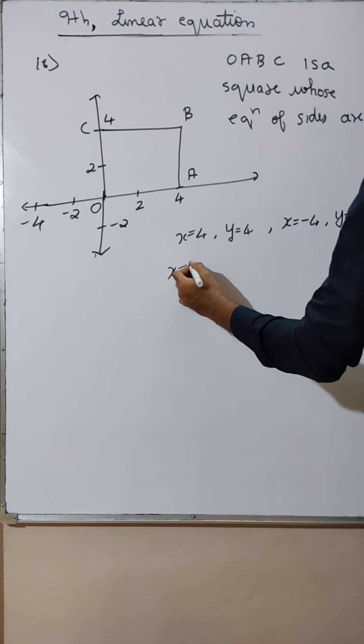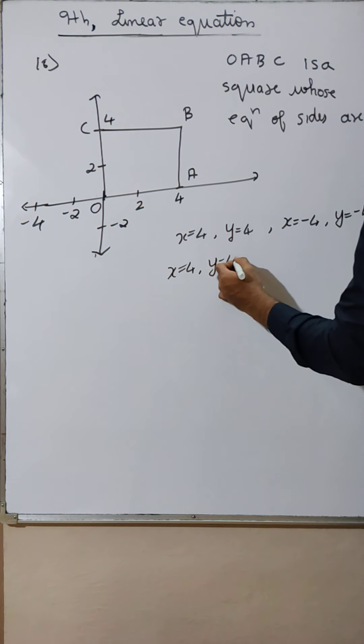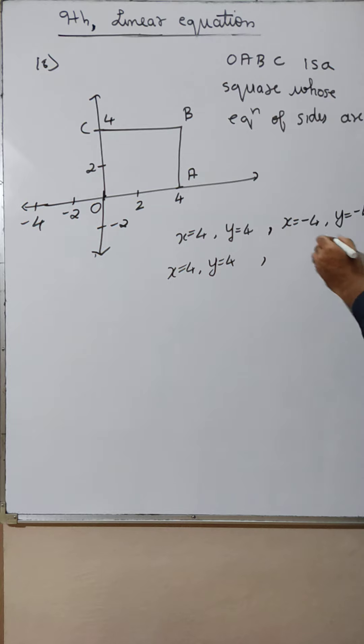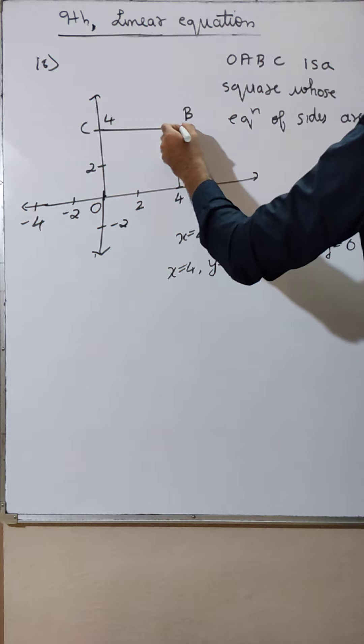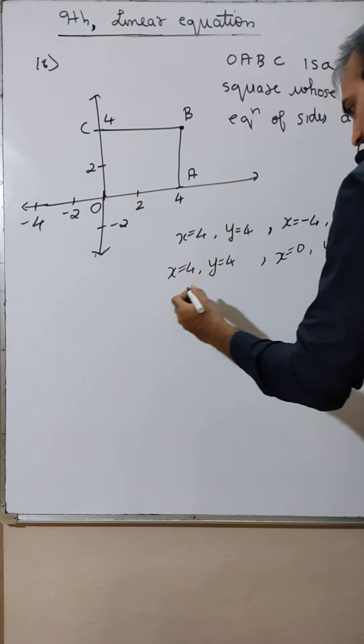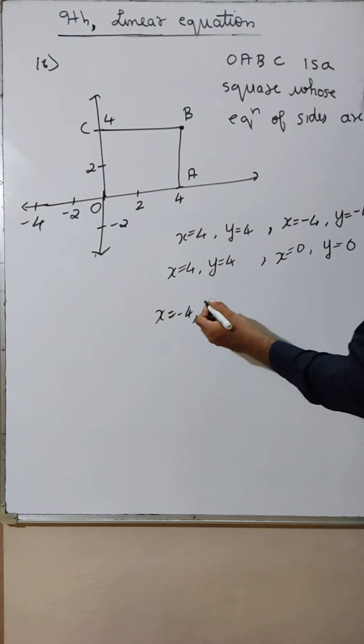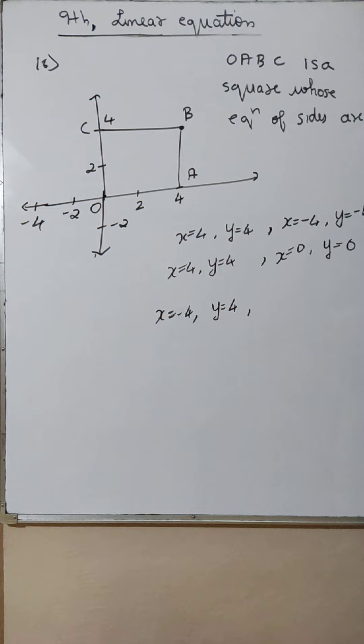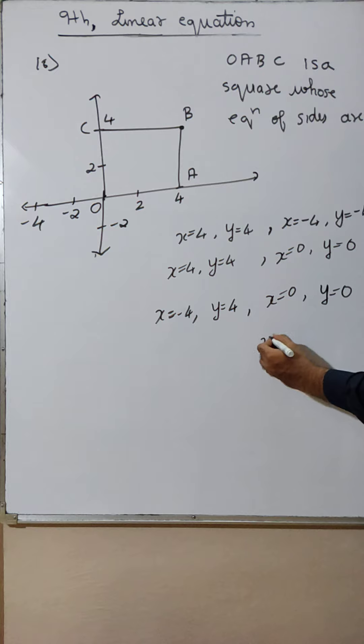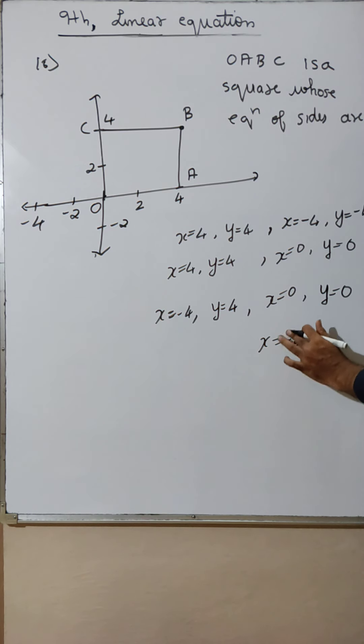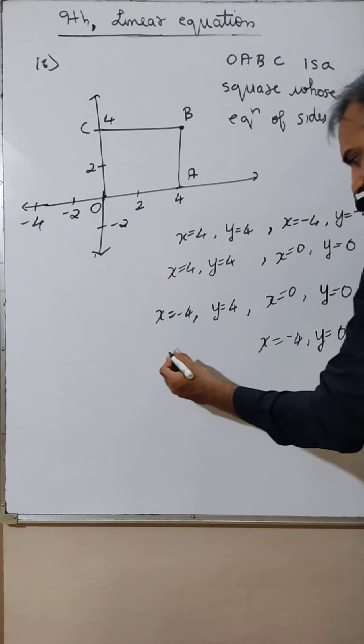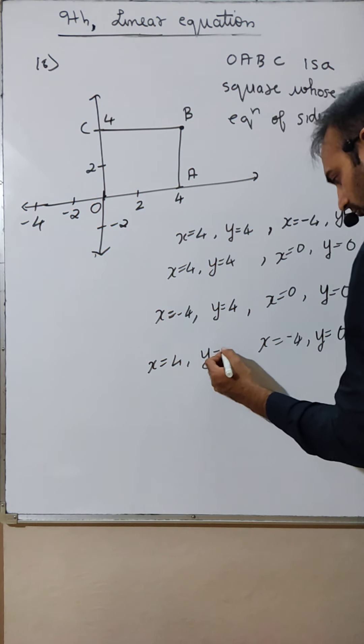Many options are there. x is equal to 4, y is equal to 4. x is equal to 0, y is equal to 0. Be careful. x is minus 4, y is 4. x is 0, y is 0. x is minus 4, y is 0. x is 4, y is 4.